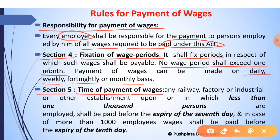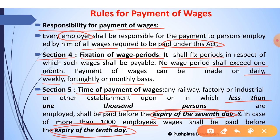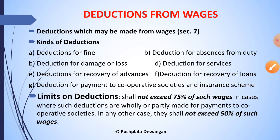Section 5 provides for the time for payment of wages. In any railway, factory, or industrial or other establishment where less than one thousand persons are employed, payment of wages shall be made before the expiry of the seventh day of the next month. Where more than one thousand persons are employed, wages shall be paid before the expiry of the tenth day of the next month.